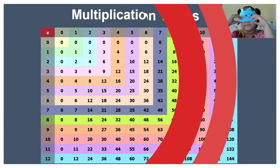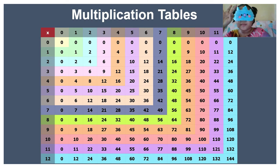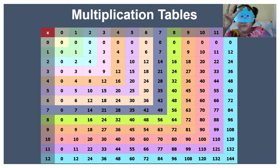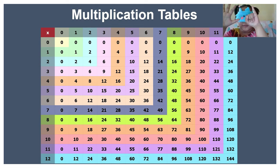5 times 1 equals 5. 5 times 2 equals 10. 5 times 3 equals 15. 5 times 4 equals 20. 5 times 5 equals 25. 5 times 6 equals 30.